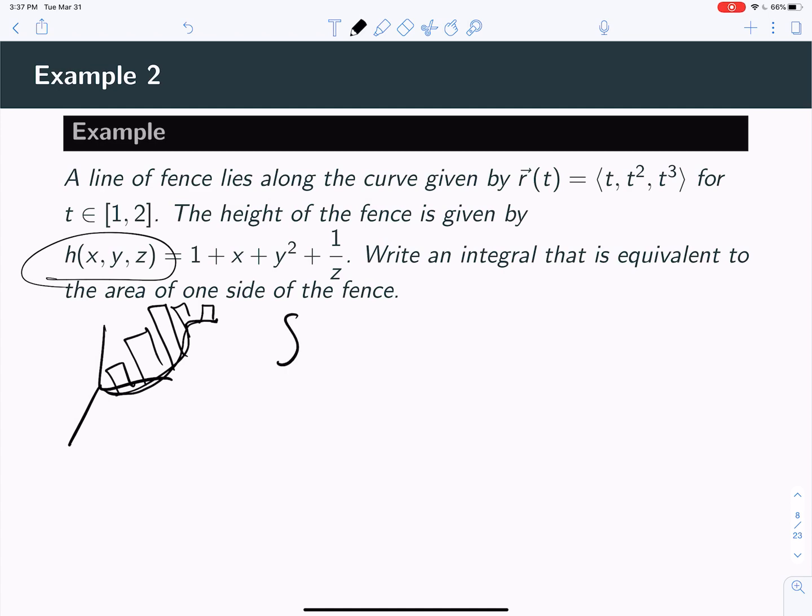So in theory, what we have is an integral over the curve of the height of the fence times the length of the fence added up for the whole curve. That gives you the area of the fence. And now we need to start setting up our problem.